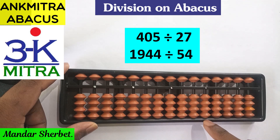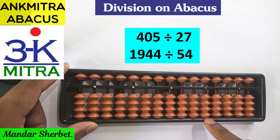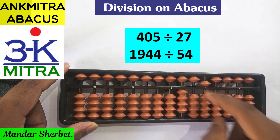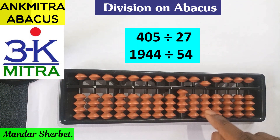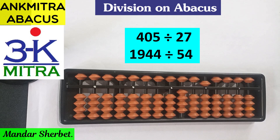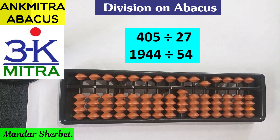The number to be divided in the first sum is 405, so it should end on this dot. I've placed 405 on the question set. The divisor is a two-digit number, that is 27. Since we may not know the table of 27 by heart, we'll calculate some multiples beforehand.